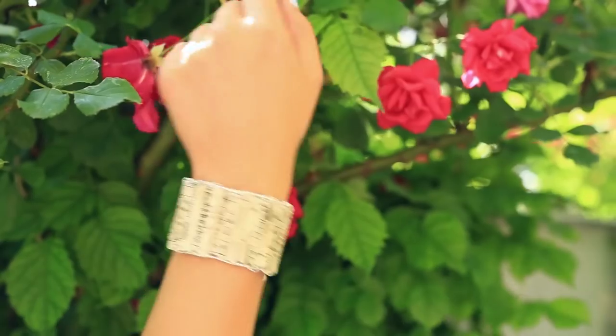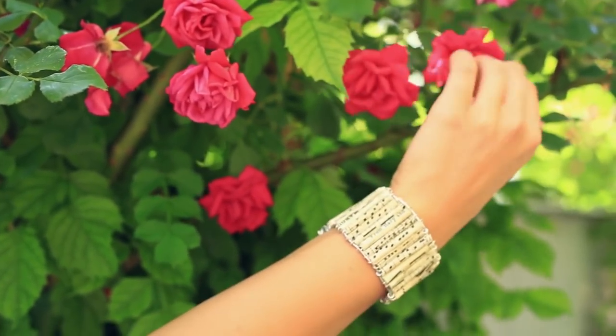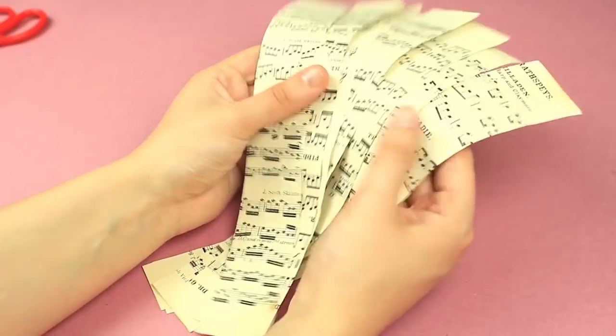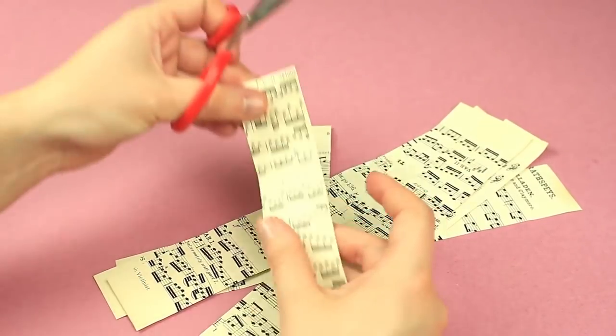Now, let's make a musical note paper bead bracelet. Cut out the notes into strips of about 1 1⁄2 inches. Cut each strip into three parts.